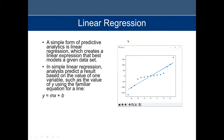Linear regression is a good example of predictive analysis. We use linear regression with one attribute — the x variable (independent variable) — to determine y (the dependent variable). The simple form of predictive analysis is linear regression, which creates a linear expression that best models a given dataset. In simple linear regression, you predict a result based on one variable using the familiar straight-line equation.